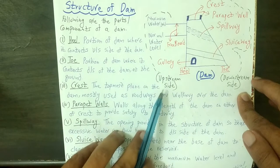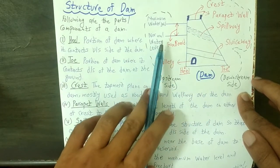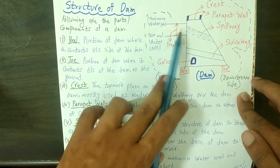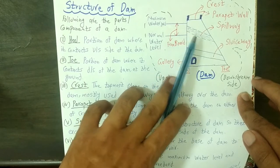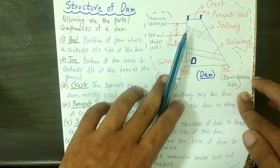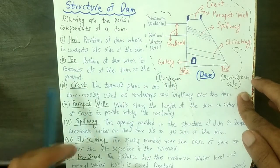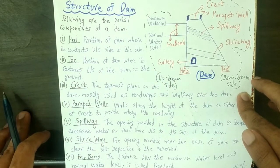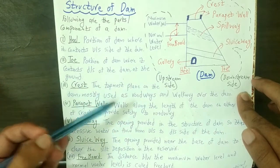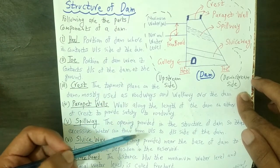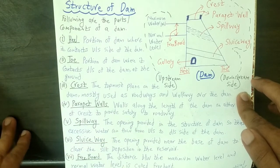The spillway is the opening between the upstream side and downstream side which provides passage for excessive water to flow from upstream to downstream. As written in the definition, it is an opening provided in the structure of the dam so that excessive water can flow from upstream to downstream side.